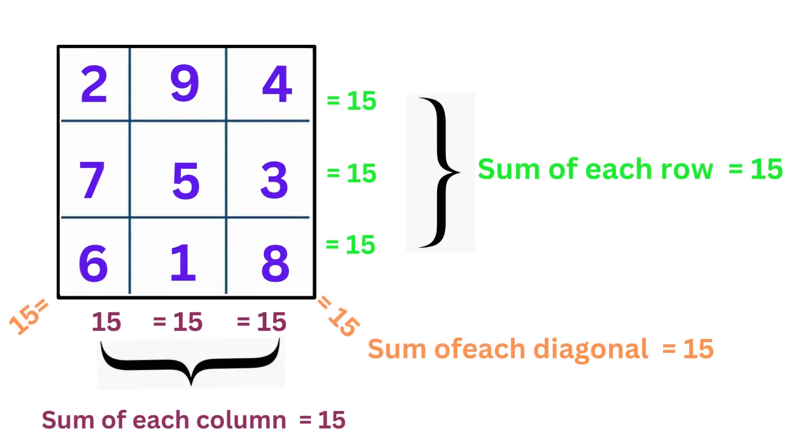Since the sum of each and every row, column and diagonal are equal, we can declare that this is a magic square.